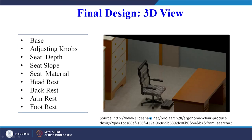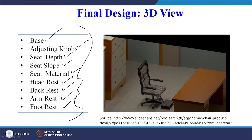Here is the final 3D view of the chair design. The key components to be designed include: the base, adjustable knobs, seat depth, seat slope, seat material, head rest, back rest, arm rest, and foot rest. If we take into account all these components and design them properly, keeping in mind standard guidelines and anthropometric data for a particular geographical region, the chair will be ergonomically designed and will provide a comfortable working environment for the worker.